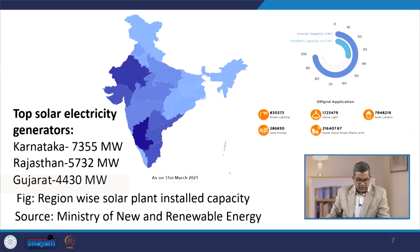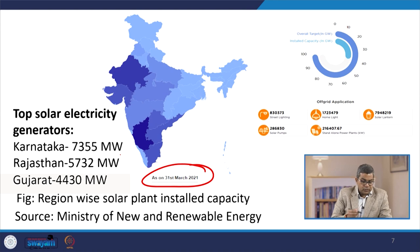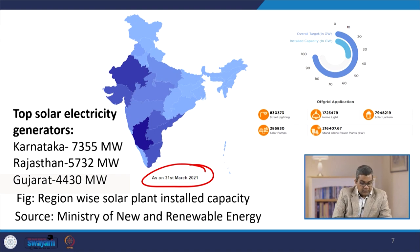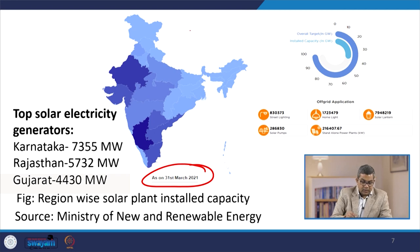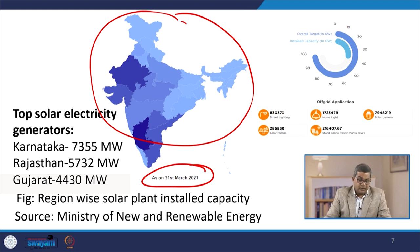Here is some statistical information. As on March 31st, 2021, the top solar electricity generators are Karnataka at 7355 megawatt, Rajasthan at 5732 megawatt, and Gujarat at 4430 megawatt. In the figure, you can see the region-wise solar plant installed capacity, with the reference being the Ministry of New and Renewable Energy.